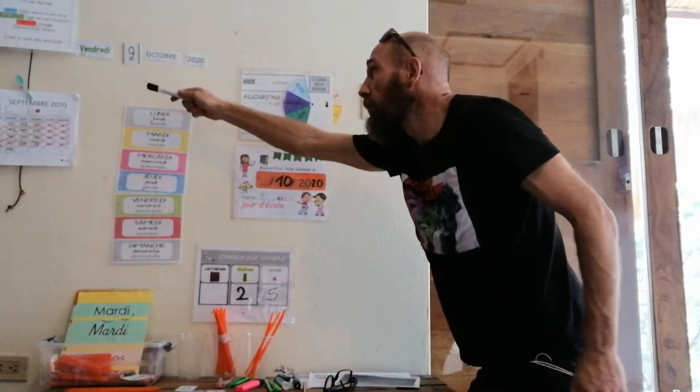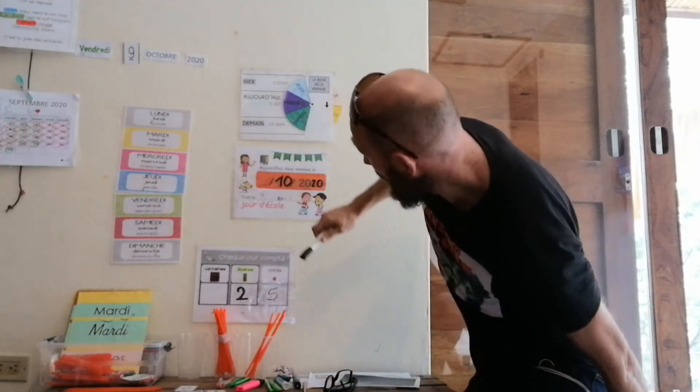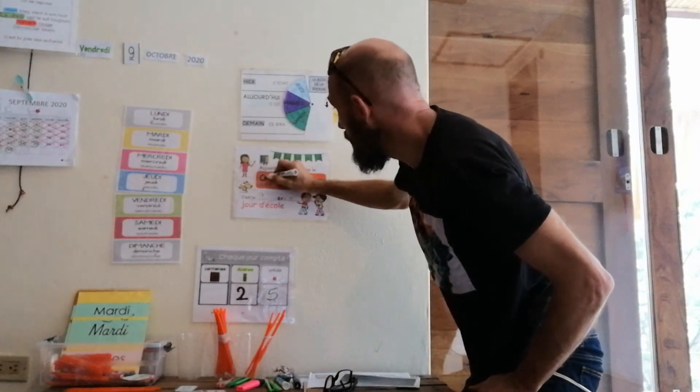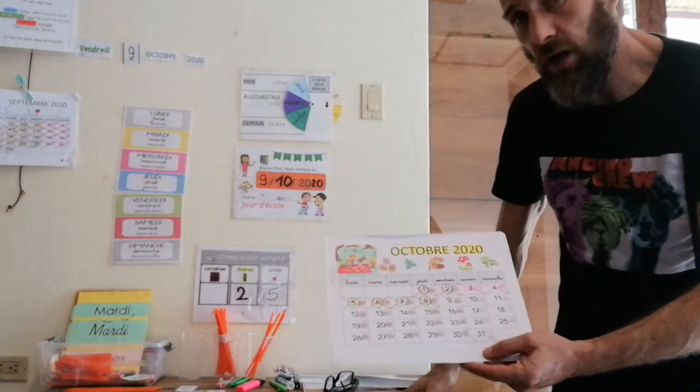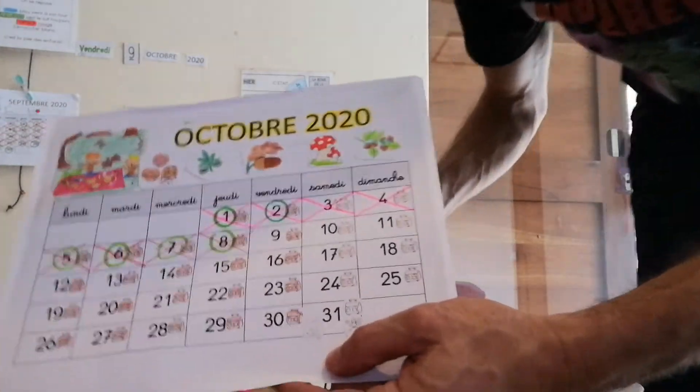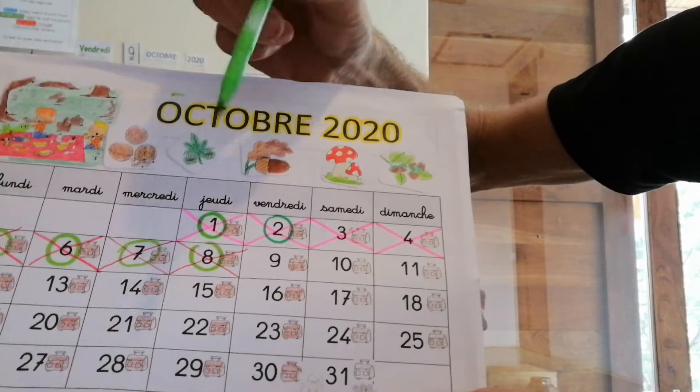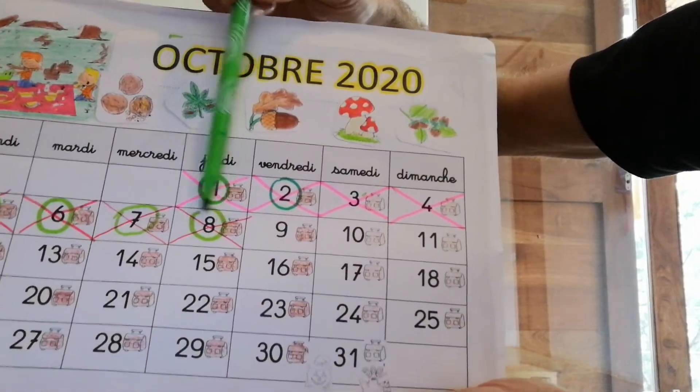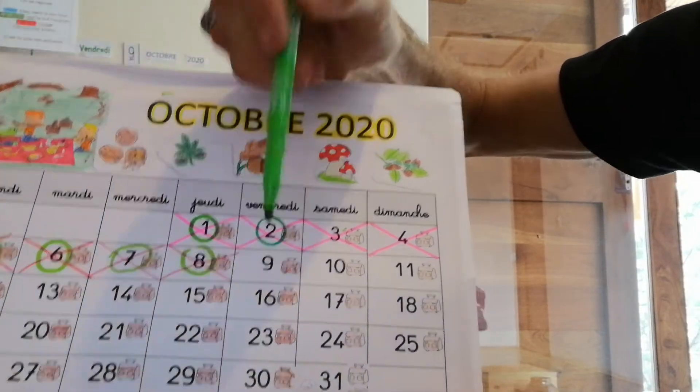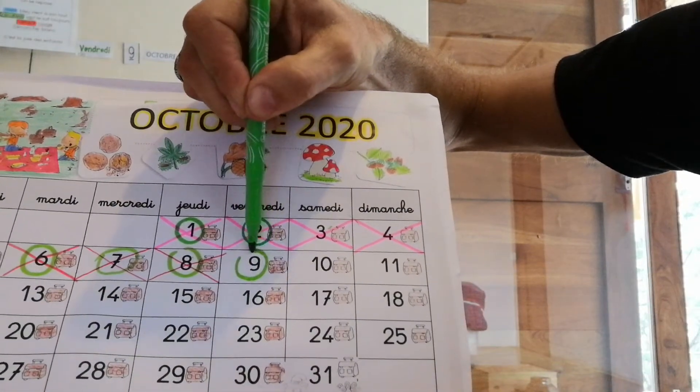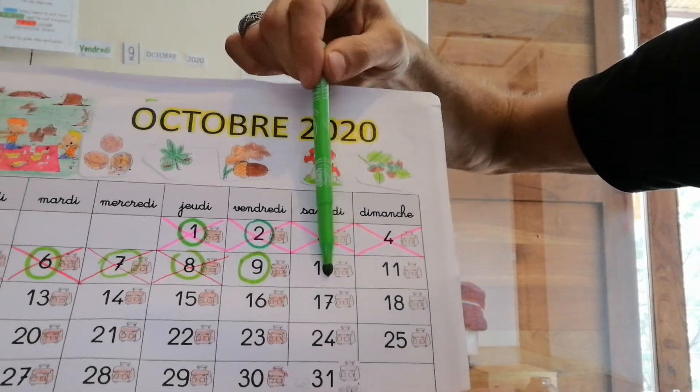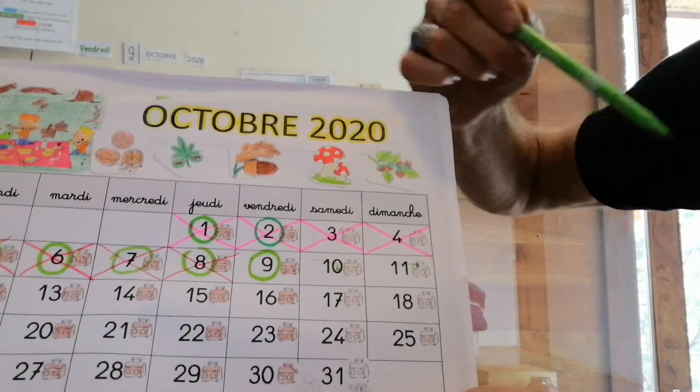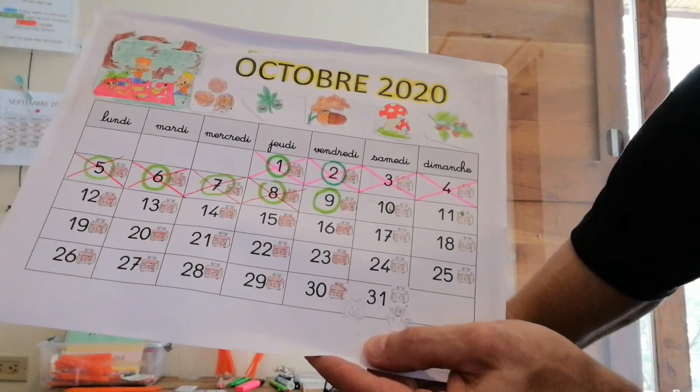Alors, nous avons vu que nous sommes donc vendredi 9 octobre 2020. Je peux donc dire que nous sommes le 9 octobre, puisque c'est le dixième mois de l'année. Si nous reprenons notre calendrier du mois d'octobre, tu vas voir que précisément, hier, c'était jeudi 8, c'est terminé. Aujourd'hui, nous sommes bien vendredi 9. Nous sommes ensemble. Donc, c'est un jour d'école. Je vais l'entourer.